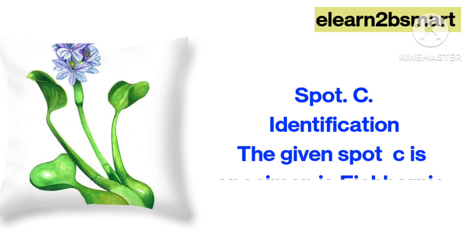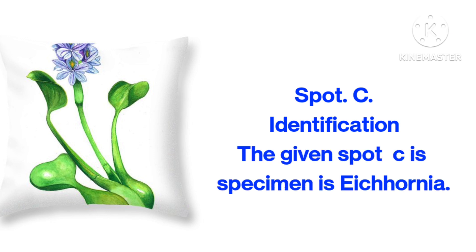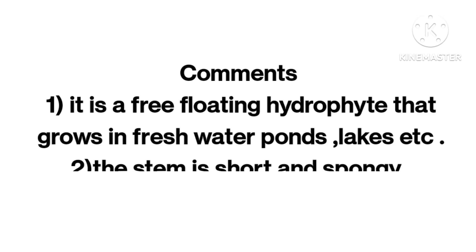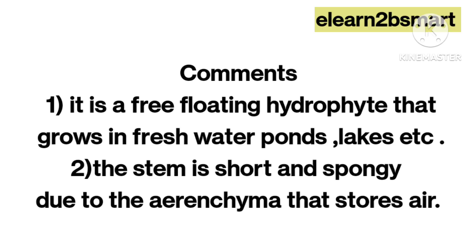Spot C. Identification: The given spot C specimen is Eichhornia. Comments: It is a free-floating hydrophyte that grows in freshwater ponds, lakes, etc. The stem is short and spongy due to the aerenchyma that stores air.